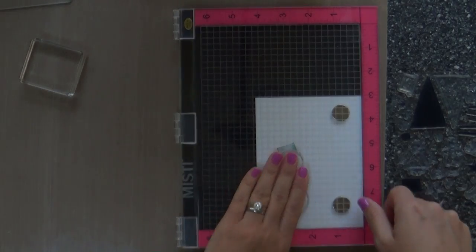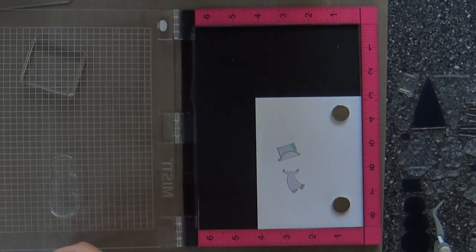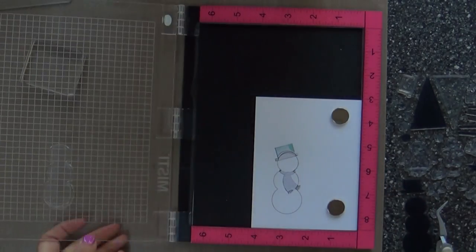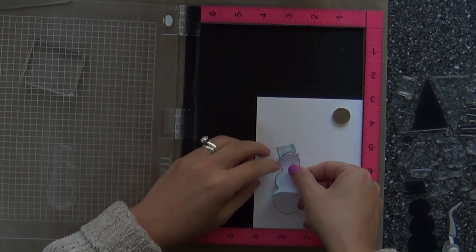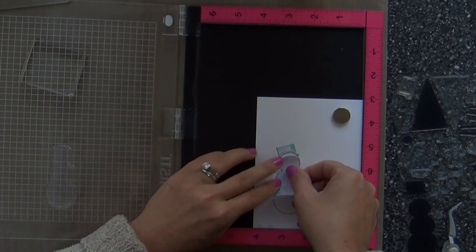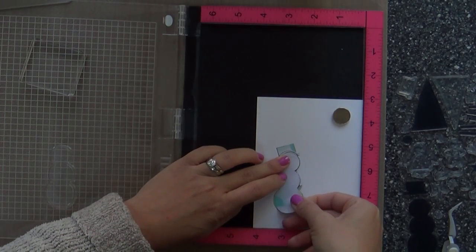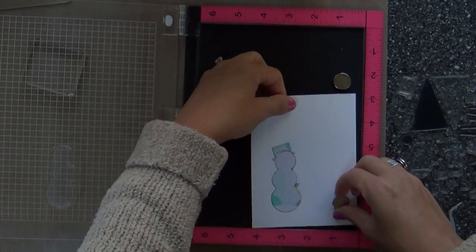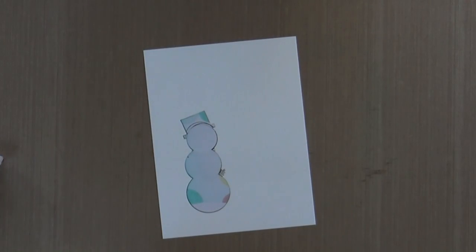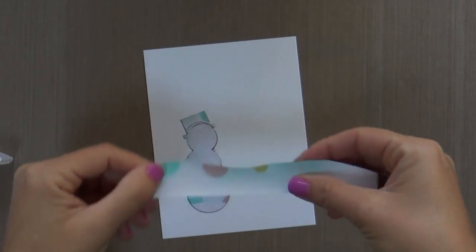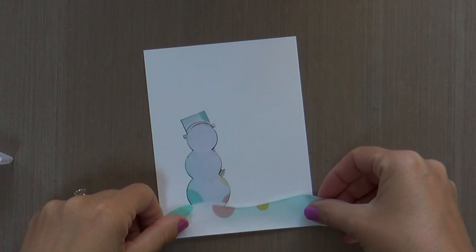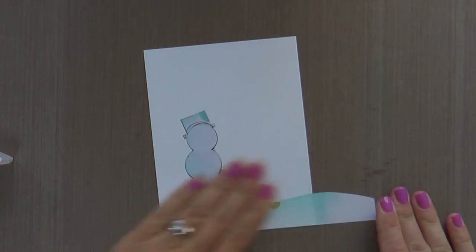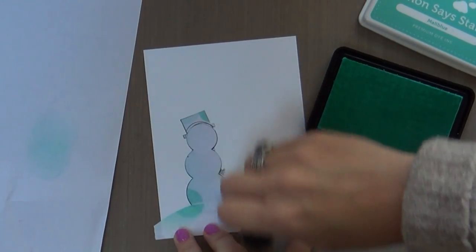So you've got your hat masked off, your scarf masked off. Now you can stamp your snowman. And so that's what I'm doing. I'm using Memento Tuxedo Black ink because I'm going to do a little Copic coloring when this is all done. And we'll go ahead and mask off our snowman. And then once we get that done, we're going to mask off a little snowy hill down below the snowman so it looks like he's kind of standing in the snow and not just floating in thin air. And the way I did that was I took some Post-it tape and I just freehand trimmed a little hill with my scissors.